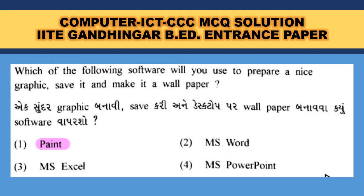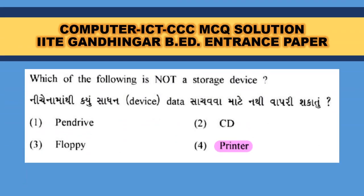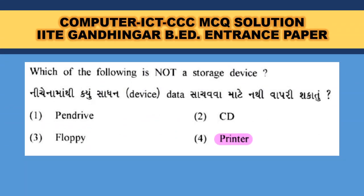Which software will you use to prepare a nice graphic, save it, and make it into a whole paper? MS Paint is the basic software. A computer program that spreads on its own and damages a computer is a virus. Which of the following is not a storage device? You can store data on a pen drive, CD, and floppy — a printer gives printout, so printer is the correct answer.